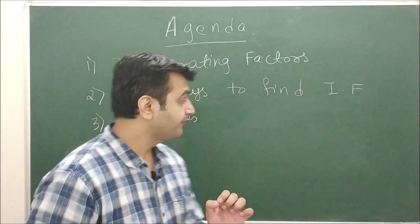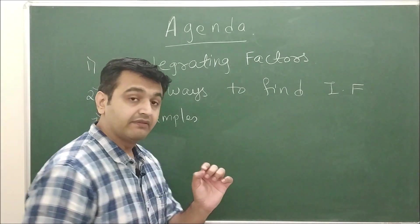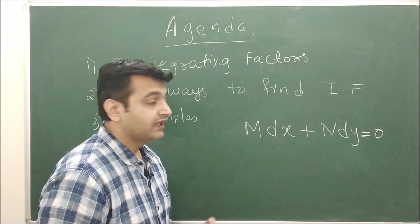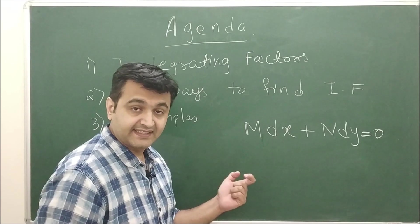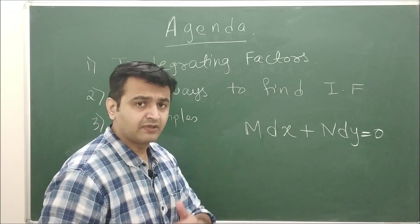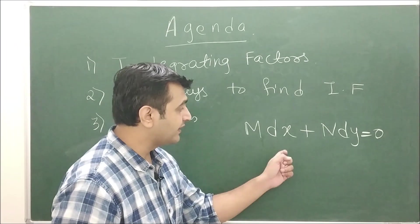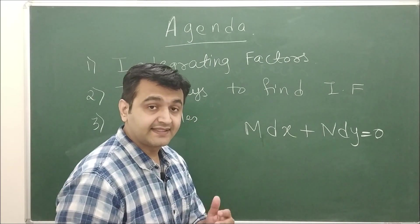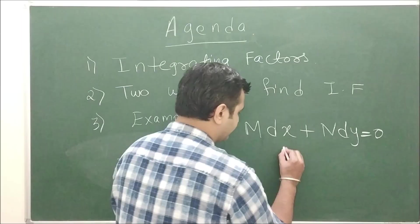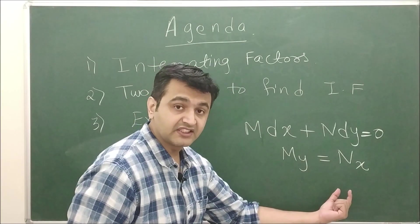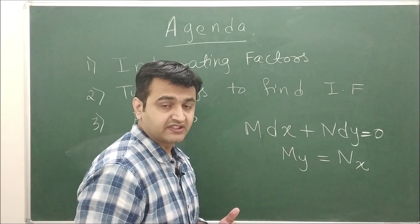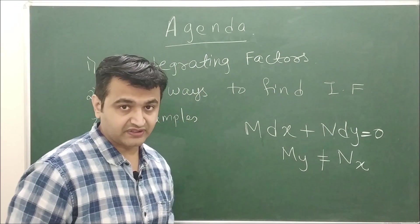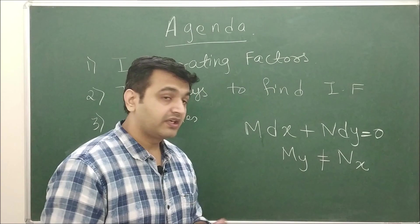In our previous lecture, we saw that for a first order linear differential equation of the form M dx + N dy = 0, it is an exact differential equation if there exists a differentiable function u whose total derivative equals M dx + N dy. The necessary and sufficient condition is that ∂M/∂y equals ∂N/∂x. If they are not equal, it is a non-exact differential equation.